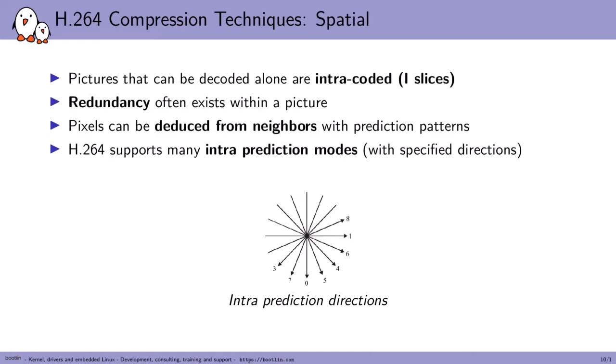Another compression technique in H.264 is intra-coding, which uses redundancy within a picture — like a wall with a constant color. We use prediction patterns with directions to deduce the values of neighboring pixels from previous pixels, reducing the amount of information we need to transmit.